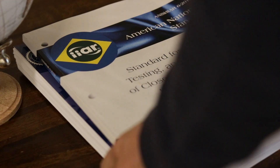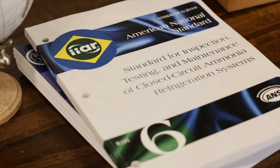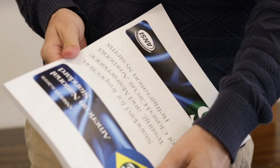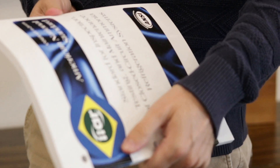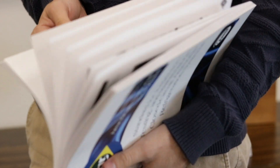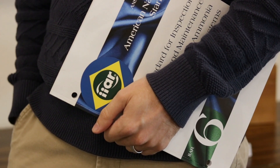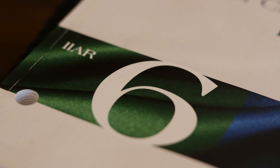The checklists contained in IIAR 6 Appendix B are derived from a legacy document named IIAR Bulletin 109. For years, the Bulletin 109 Checklists, or B109s, served as the gold standard for documenting annual mechanical integrity inspections for ammonia refrigeration equipment. In 2019, IIAR retired Bulletin 109 when the first edition of Standard 6 was published. Standard 6 addresses the minimum requirements for inspection, testing, and maintenance of ammonia refrigeration systems, and includes slightly altered versions of the B109s in Appendix B.